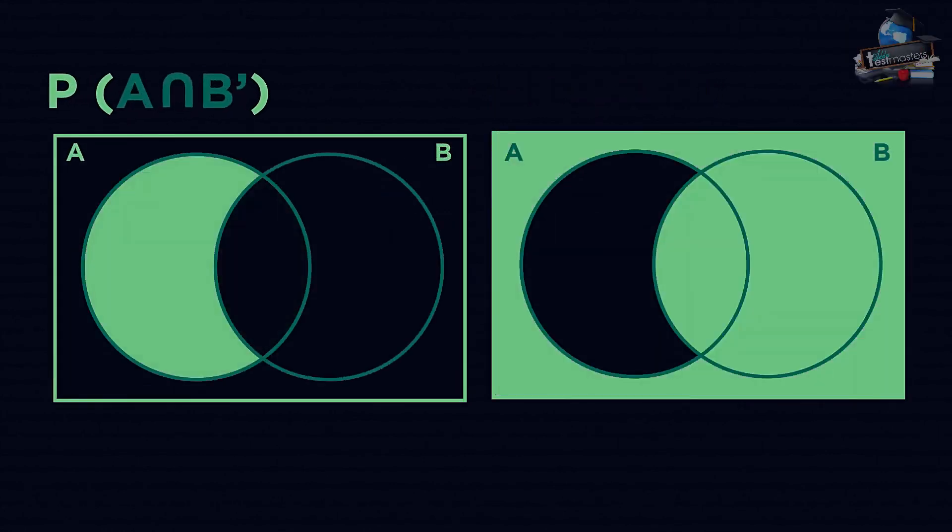This is P(A) intersection B'. Can you work out the notation for the inverse Venn diagram? How did you do? P(A') union B.